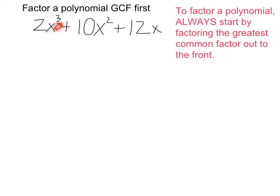So here's a simple example. Each of these terms is going to be divisible by 2x. Each of the coefficients is divisible by 2, and they each have at least an x in them.